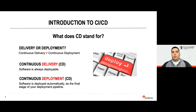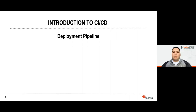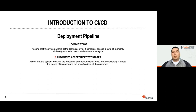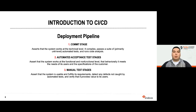Let's look at the stages usually seen in a deployment pipeline. There is the commit stage, which asserts that the system works at a technical level — compiling the code, passing a suite of automated tests, and running static code analysis. The automated acceptance test stage asserts that the system works at the functional and non-functional level, meeting all requirements. The manual test stage detects defects not found during automated testing and verifies that the software provides value to its users.